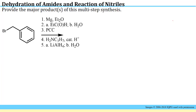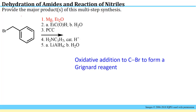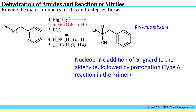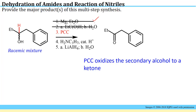Here's another example of a multi-step synthesis problem. The first step is to add magnesium in diethyl ether, which you should recognize as an oxidative addition to the carbon-bromide bond to form a Grignard reagent. The second step provides an electrophile — specifically, nucleophilic addition of the Grignard to an aldehyde, followed by protonation of the oxygen by water. That's a carbonyl reaction type A from the primer. We'll get a racemic mixture of the secondary alcohol because a new chiral center is generated. Step three is PCC (pyridinium chlorochromate), an oxidizing agent that generates a ketone from the secondary alcohol.